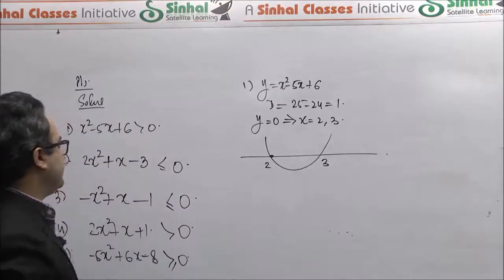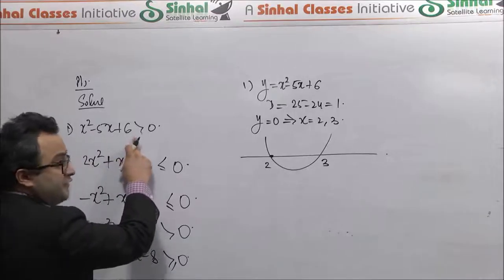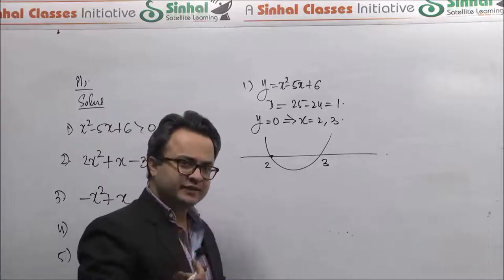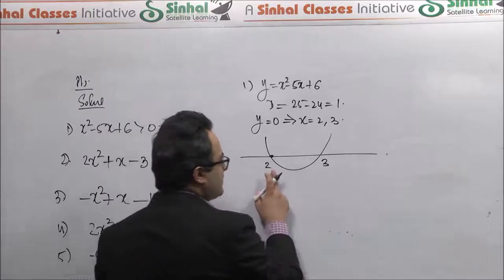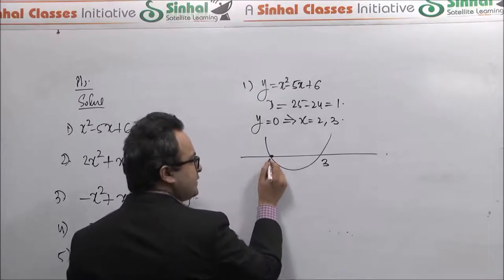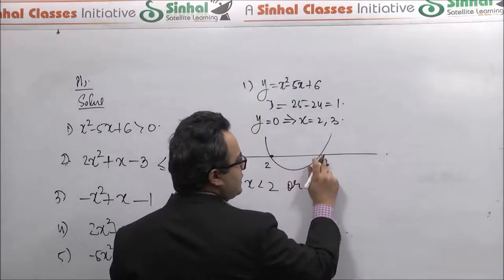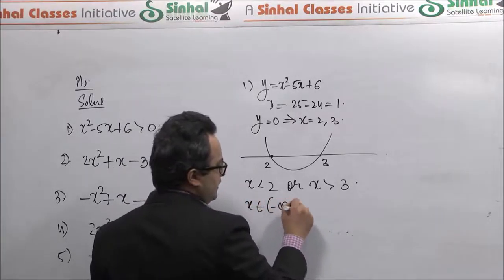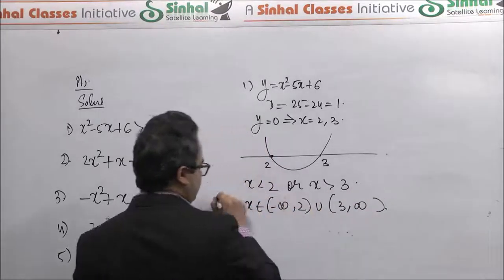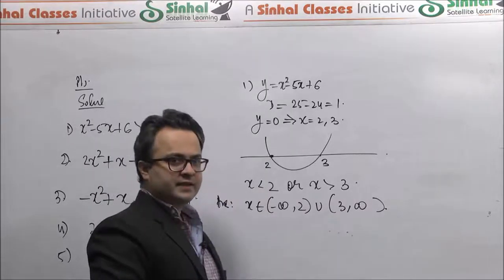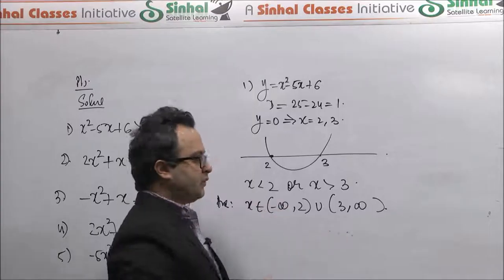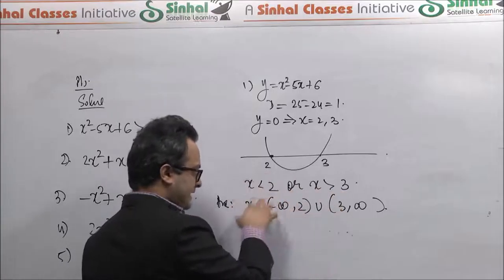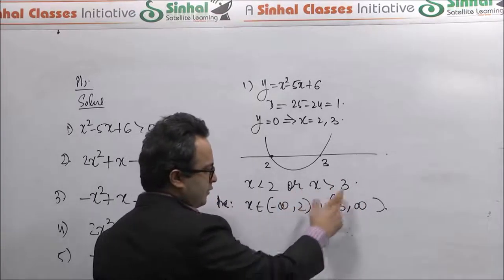We want those values of x for which this expression y is positive — that is, we want the graph to be above the x-axis. Clearly from the graph, the graph is above the x-axis when x is less than 2 or when x is greater than 3. So the final answer in bracket notation is x belongs to minus infinity to 2 union 3 to infinity. If the inequality had been x squared minus 5x plus 6 greater than or equal to zero, we would also include the endpoints 2 and 3, using square brackets. If it had been x squared minus 5x plus 6 negative, the graph needs to be below the x-axis, which happens between 2 and 3, so the answer would be x lies between 2 and 3.